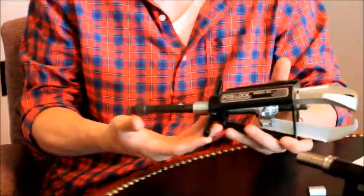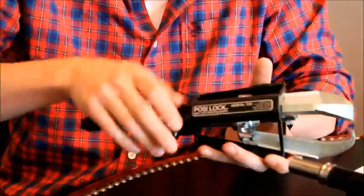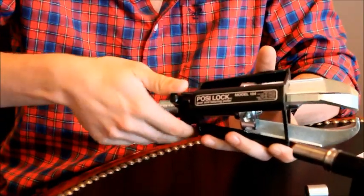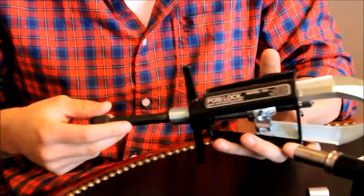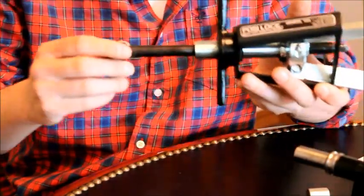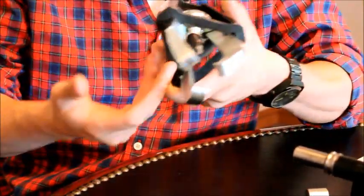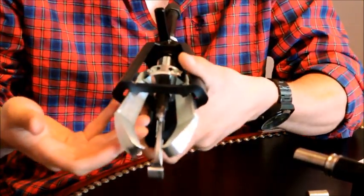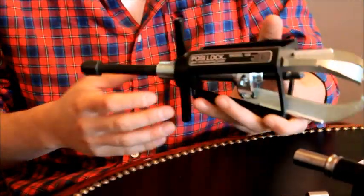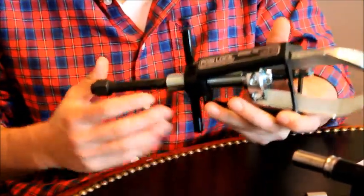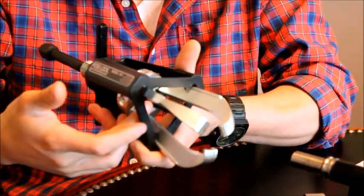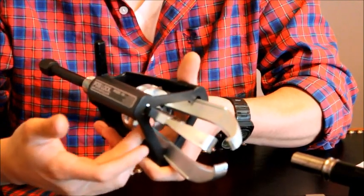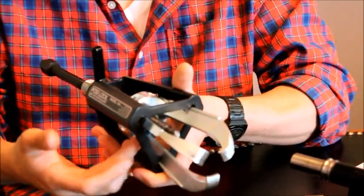The T-handle right here is what opens and closes the jaws simply by twisting clockwise and counterclockwise. The center bolt here is self-aligning just because it's directly in the middle of the puller. The threads on the center bolt are rolled so that it takes less effort when applying torque.